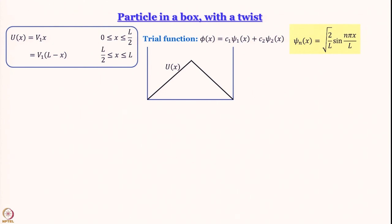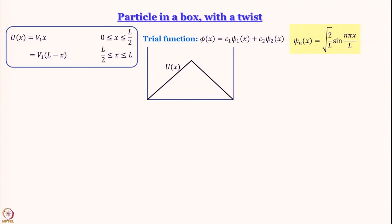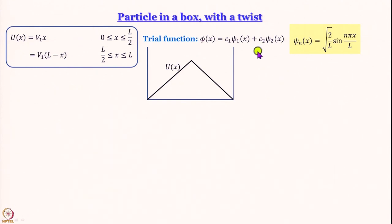This is the formulation of our problem. We will not solve every step — understanding the logic is the goal. We have the potential, the trial function expressed as a linear combination of orthonormal eigenfunctions of the V = 0 particle-in-a-box Hamiltonian, and now we evaluate the matrix elements one by one.